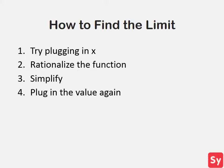In that case, we go to step two, rationalizing the function. We can't factor the function, so we will try to get rid of the square root by multiplying the numerator and denominator by the conjugate.